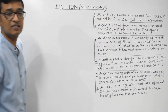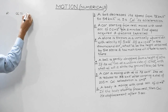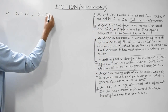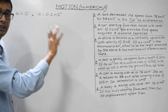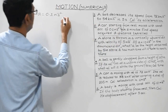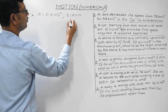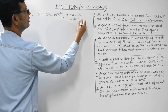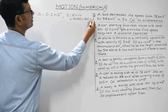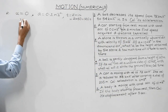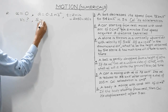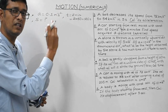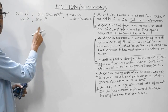Starting from rest means the initial speed u = 0. Acceleration a = 0.1 m/s². Time is 2 minutes — don't forget to convert to seconds: 2 × 60 = 120 seconds. In SI the unit of time is seconds. We need to find the final velocity v and the displacement S. Write out all given information first.